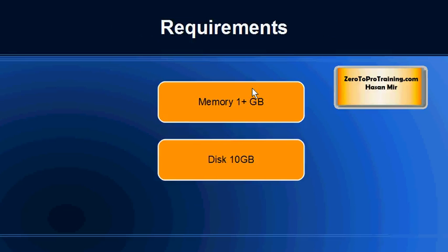You need at least one gigabyte or more of memory on your physical computer, and at least 10 gigabytes of extra disk space. The appliance file you download will itself be about one gigabyte, and once you create the virtual machine it will be about four gigabytes, so you need extra space for the virtual machine software too. In terms of memory: four gigabytes is great, three is okay, two is fine, and at one gigabyte it should work but could be a little slower.